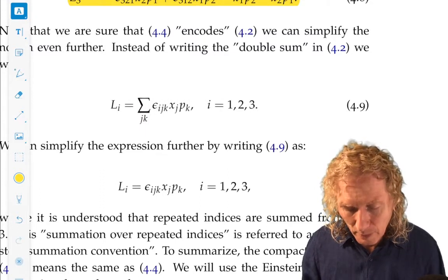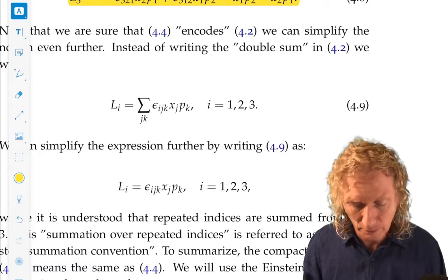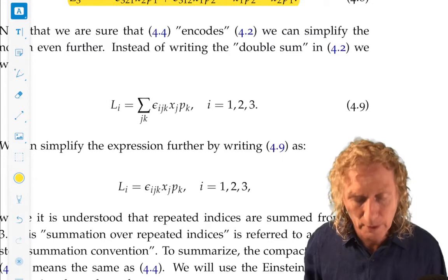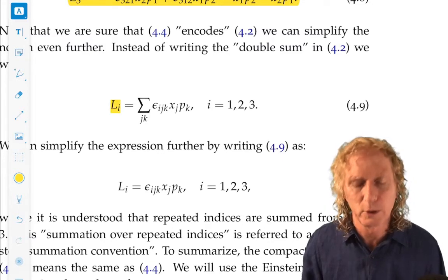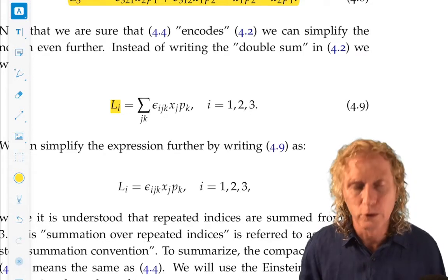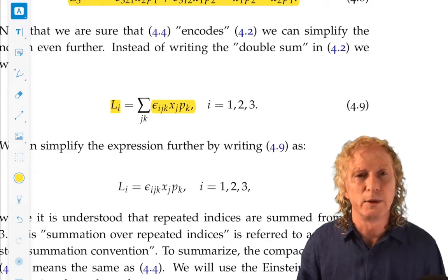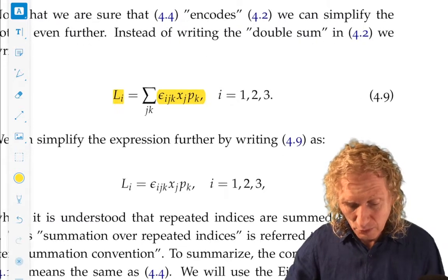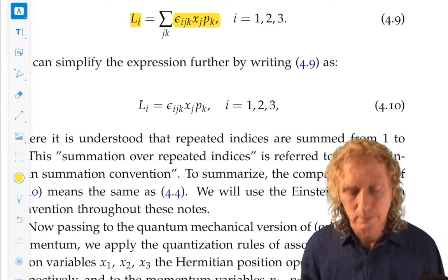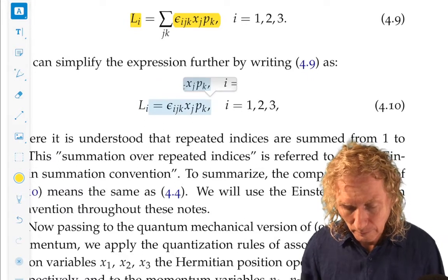Look, epsilon sub i, the first index in the Levi-Civita symbol, is the index denoting the component of angular momentum that you're computing. And then the next two, j, k, are the two indices for what you're summing over. So, you could just get rid of those sums and say, okay, I know that any time I have repeated indices, I'm going to sum over them.